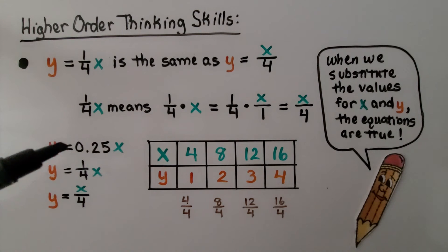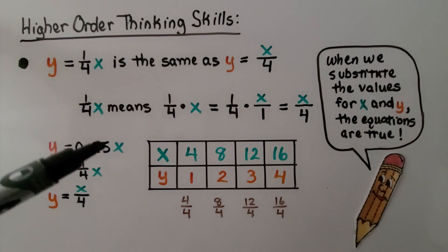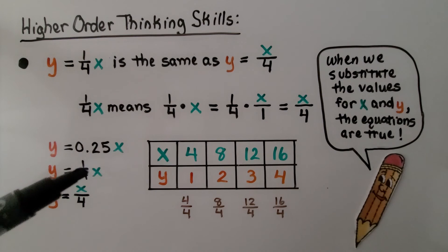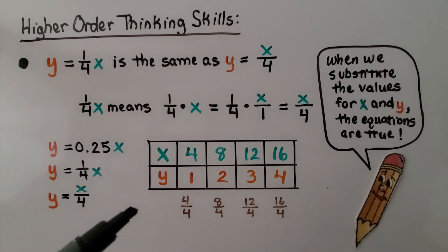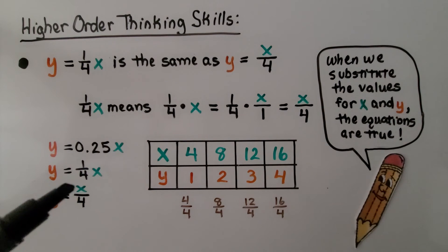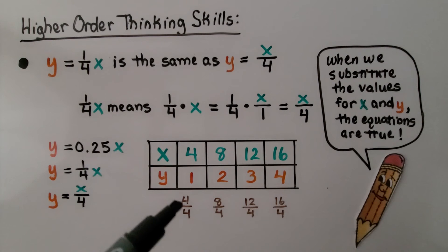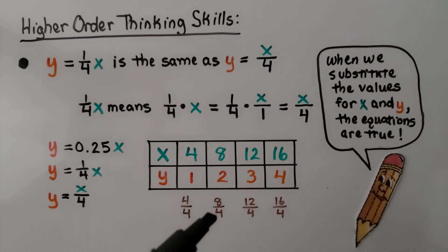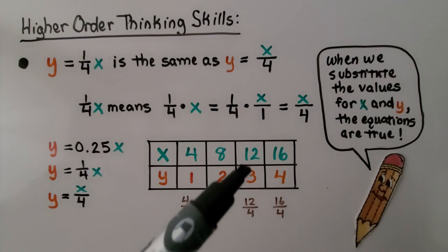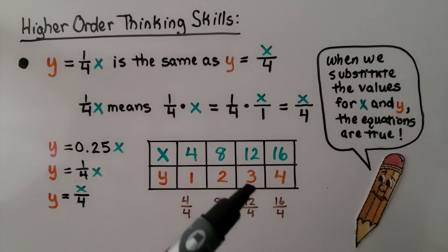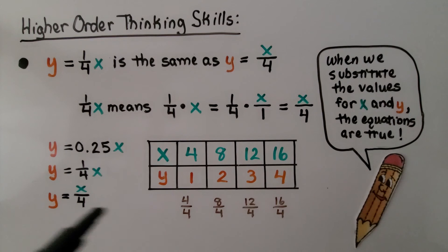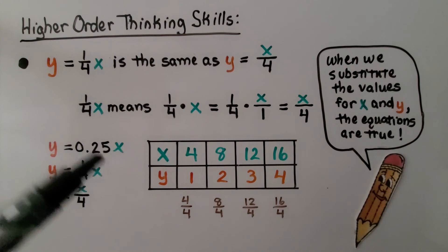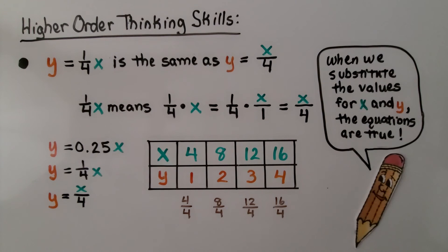For this table, y equals 0.25x, which is one-fourth x, or equivalently x divided by 4. Substituting the values: 4 divided by 4 equals 1, 8 divided by 4 equals 2, 12 divided by 4 equals 3, and 16 divided by 4 equals 4. All of these equations fit the table — when we substitute the x values, the equations are true.